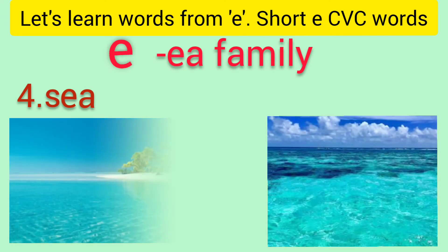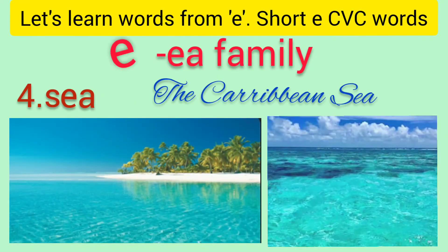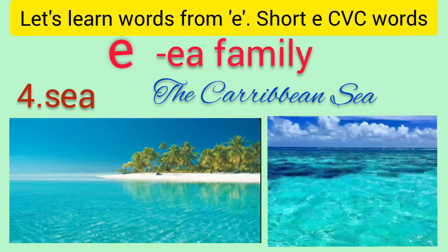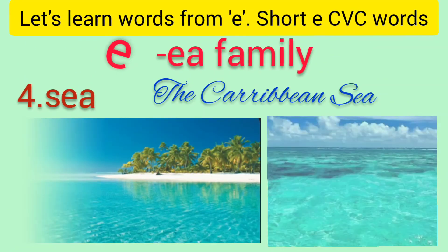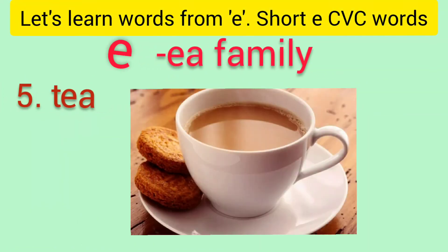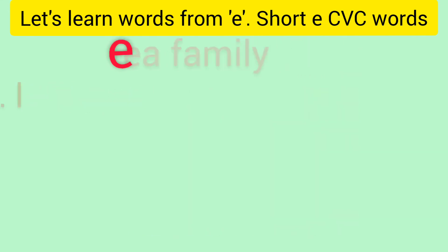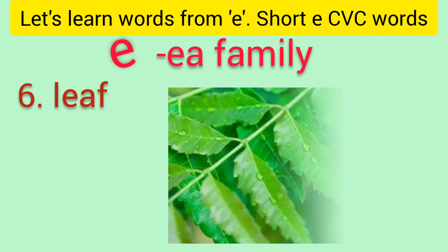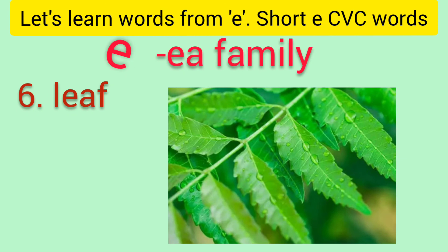Number four is S-EA: sea — the Caribbean Sea. Look at the beautiful colors of the water of the sea. Isn't it looking beautiful? Number five is T-EA: tea. Tea with biscuits in the evening is the best refreshment. Number six is L-EA-F: leaf. Look at these green colored neem tree leaves.